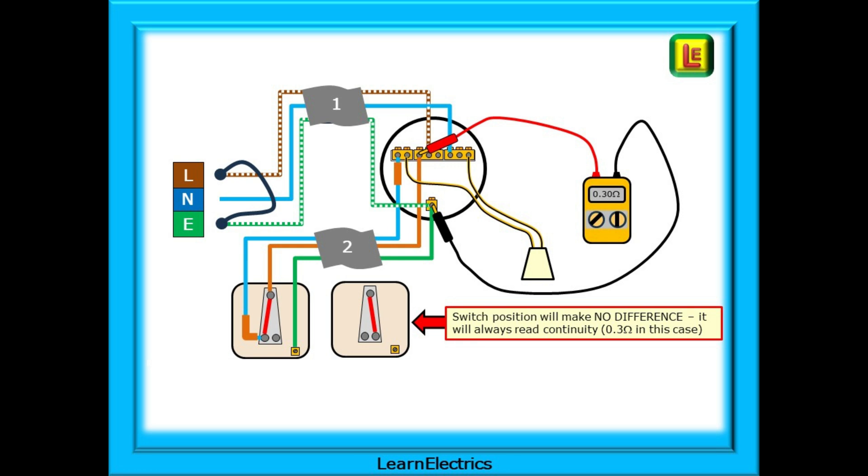In this case we have a reading of 0.3 ohms as expected and good continuity is confirmed. The switch position will make no difference to the readings. It will always read continuity which is 0.3 ohms in this case. This is a permanently energized part of the circuit.